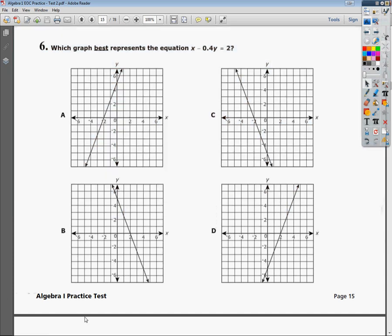Welcome. This is the Algebra 1 Practice Test. This is actually Algebra 1 Practice Test 2 for the Tennessee End of Course Test. Question number 6. The question says, which graph best represents the equation x minus 0.4y equals 2?